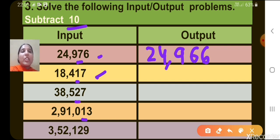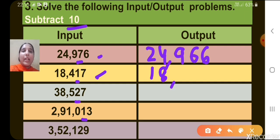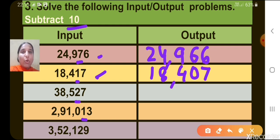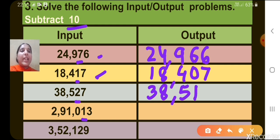The first number is 24,976. Look at the digit at the 10's place, which is 7. So 7 minus 1 gives 6. The output will be 24,966. The next number is 18,417. The digit at the 10's place is 1. 1 minus 1 gives 0, so the output is 18,407. The next number is 38,527. The digit at the 10's place is 2. 2 minus 1 gives 1, so the output is 38,517.